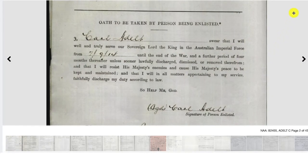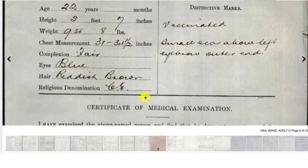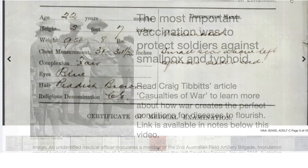We can take a quick scroll through these records. Each soldier's record will have different information. This gives us a description of Carl: he had a fair complexion, blue eyes, reddish brown hair, and a small scar above his left eyebrow on the outer end. He was also vaccinated.